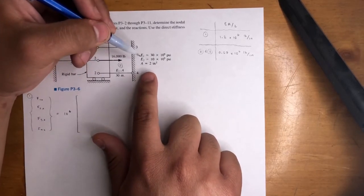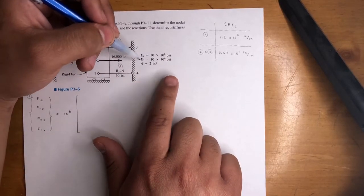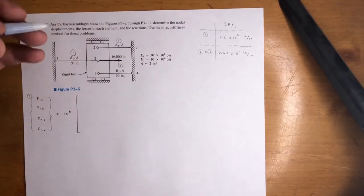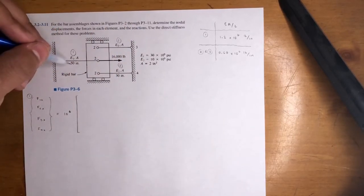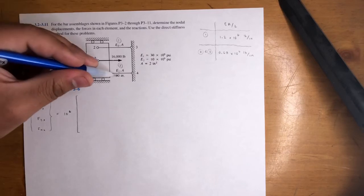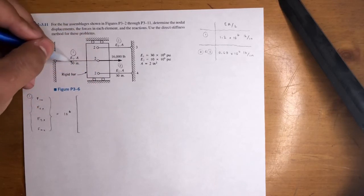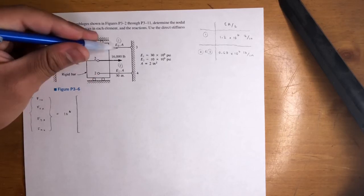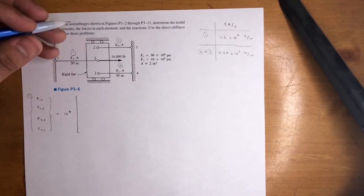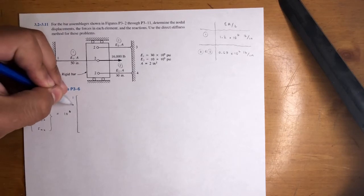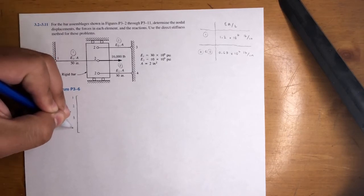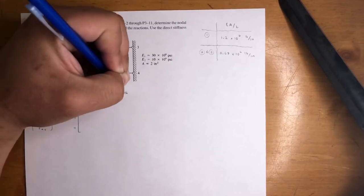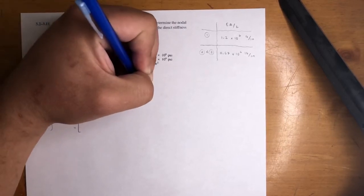Because the modulus of elasticity was different — 30 inches for elements 2 and 3, and 50 inches for element 1, and the modulus of elasticity was different compared to these two. So let's go ahead and do the stiffness matrix. Nodes 1, 2, 3, 4 — these are your nodes. This is 1, 2, 3, and 4.